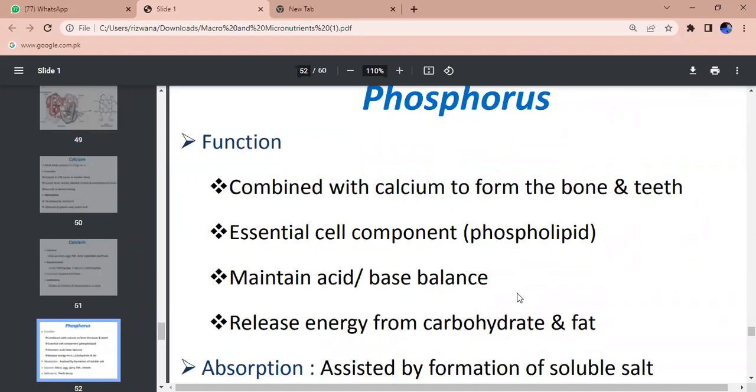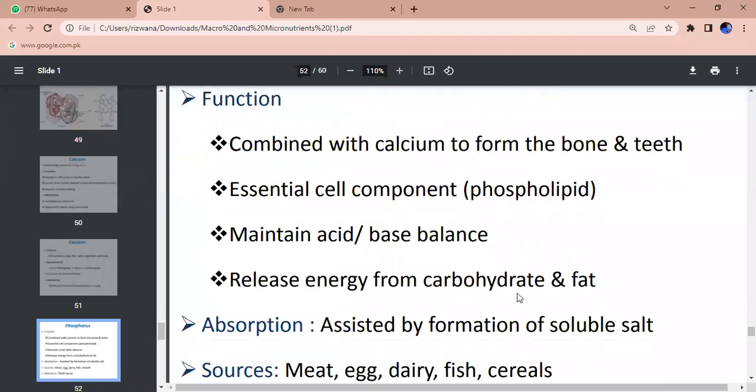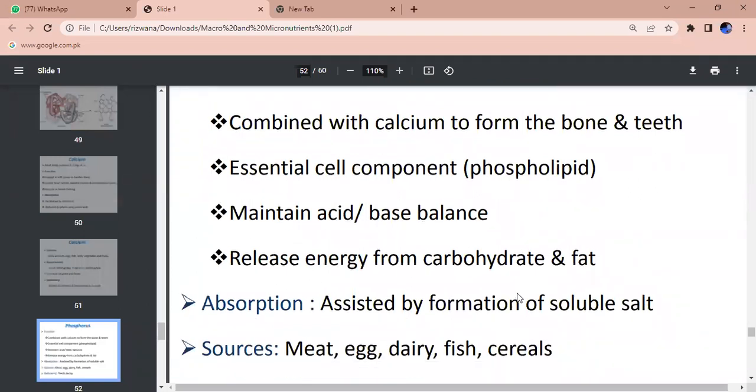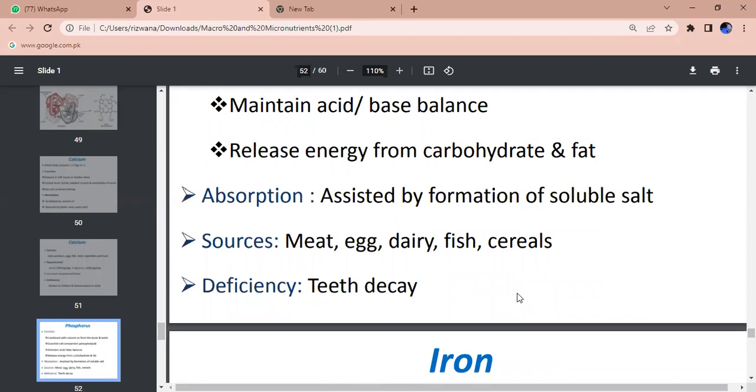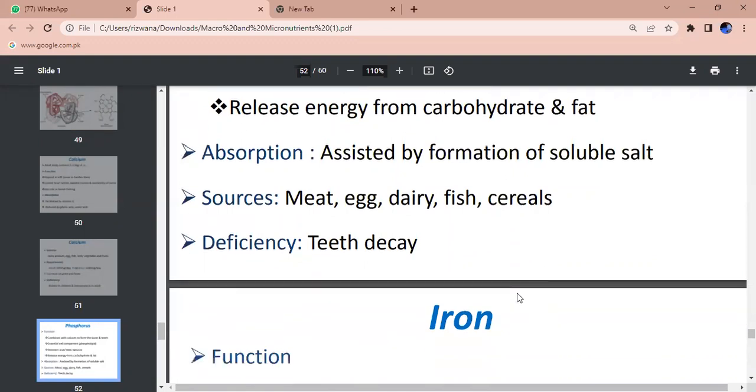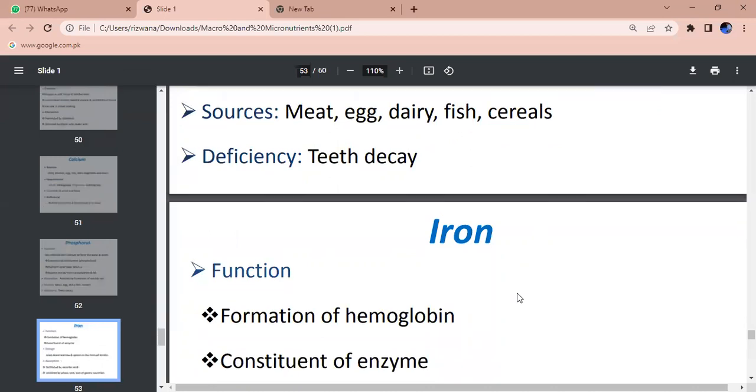Phosphorus - function: combined with calcium to form the bone and teeth. Essential cell component - phospholipid. Maintains acid-base balance. Releases energy from carbohydrate and fat. Absorption assisted by formation of soluble salt. Sources - meat, dairy, fish, cereal. Deficiency - tooth decay.